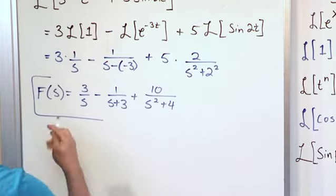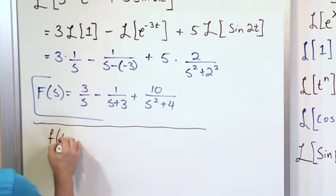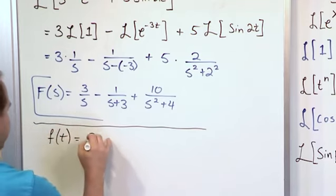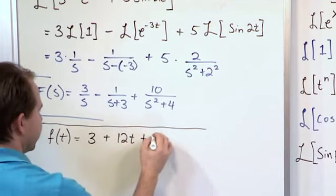Let's go and work another one down below here. We have a function of time 3 plus 12t plus 42.